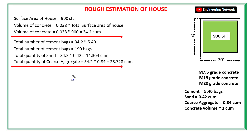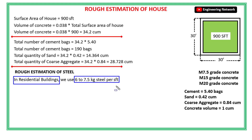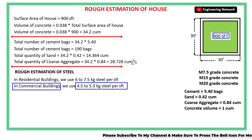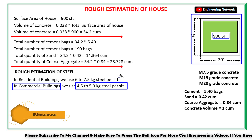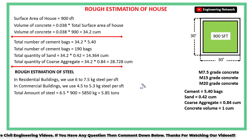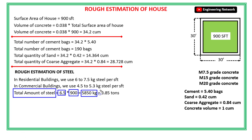Now let's talk about the rough estimation of steel, which is also one of the main components in house construction. In residential buildings, we normally use 6 to 7.5 kg of steel per square foot. The total surface area of this house is 900 square feet, and if I take 6.5 kg per square foot for a residential building, then the total amount of steel is 6.5 multiplied by 900, which equals 5,850 kg, or 5.85 tons.